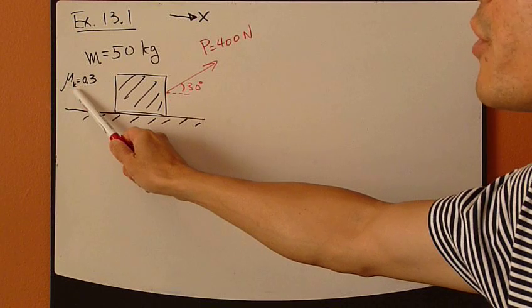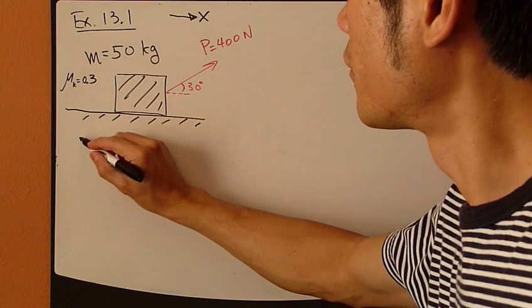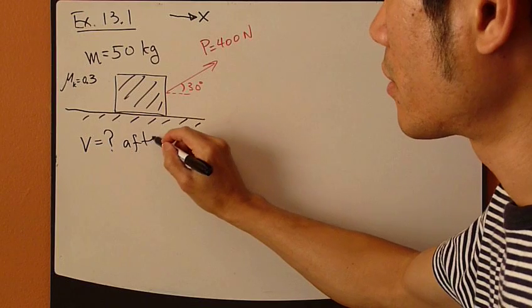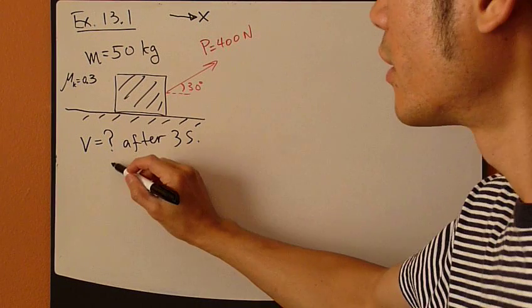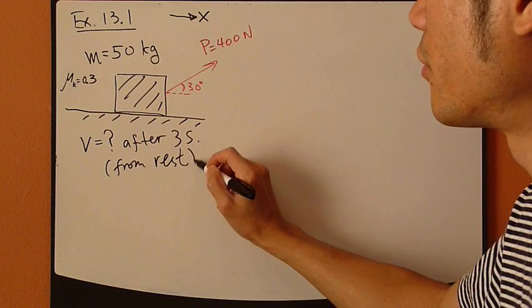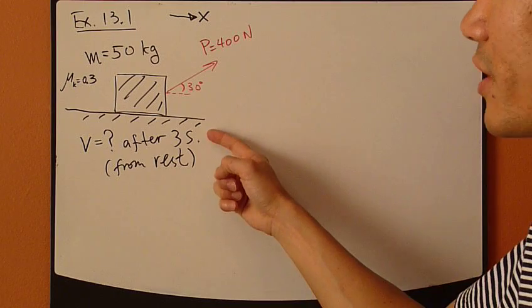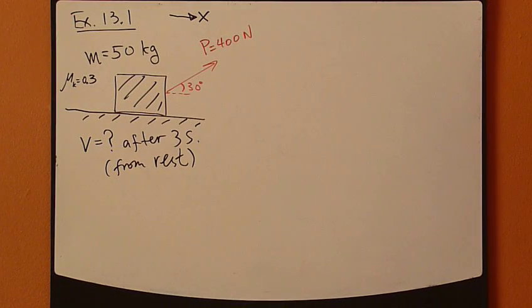The kinetic coefficient of friction is given as 0.3. And you're asked to find the velocity of the crate after 3 seconds. That is, you start pulling it from rest. That is, initial velocity is 0. After 3 seconds, what is the speed of the crate?